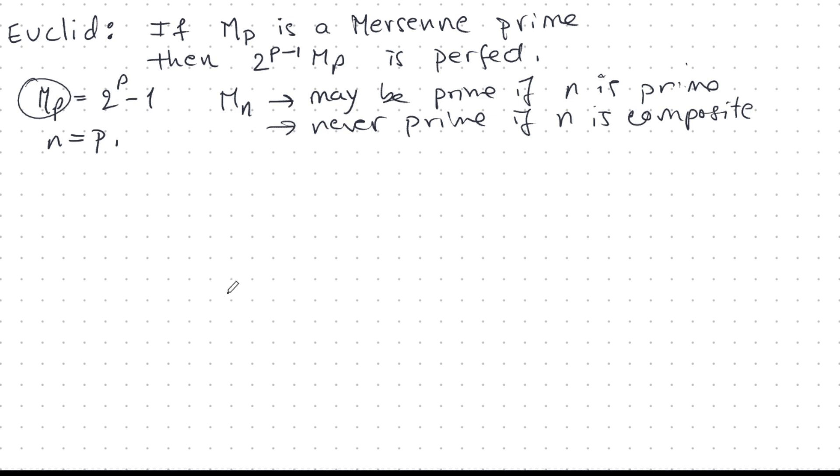This gives us a way to find perfect numbers by finding Mersenne primes. When p is 2, that's the first prime, 1 is not prime, the Mersenne number is 3, and that's prime. So I should be able to get a perfect number. And if I plug in 3 into this formula here that Euclid discovered, I get 6, a perfect number.